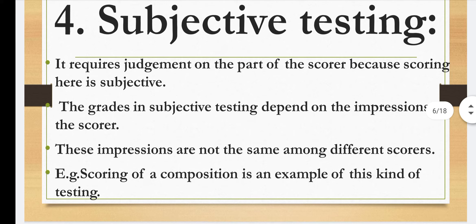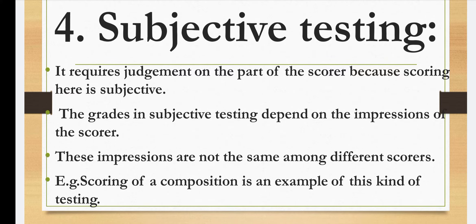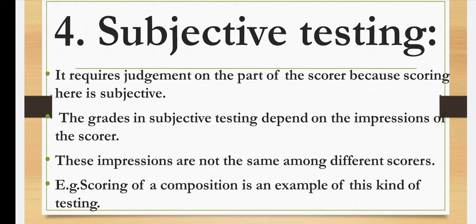Subjective testing is the opposite of objective testing — judgmental processes are included here. For example, two scorers reading a composition will think differently and give different marks. So it requires judgment on the part of the scorer because scoring here is subjective. The grades in subjective testing depend on the impression of the scorer, and these impressions are not the same among different scorers. Scoring of a composition is an example of this kind of testing.